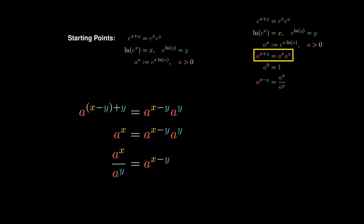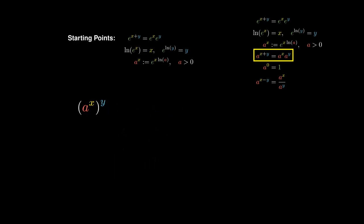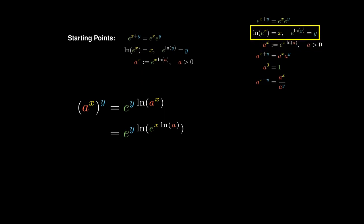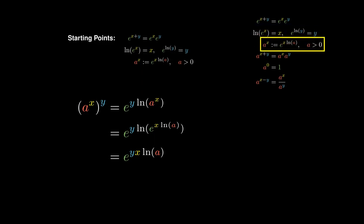Now consider the expression a to the x, all to the y. This can be thought of as the constant a to the x raised to the power of y. This allows us to rewrite the expression in terms of the natural exponential and the natural logarithm. Furthermore, the expression inside is a to the x, which allows us to unpack it one more time in terms of the natural exponential and logarithm. Over here, the natural logarithm reverses the natural exponential. But this expression is nothing more than the unpacked version of a to the yx.